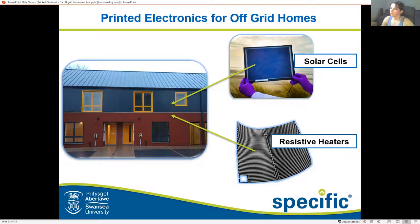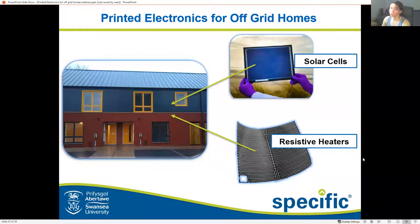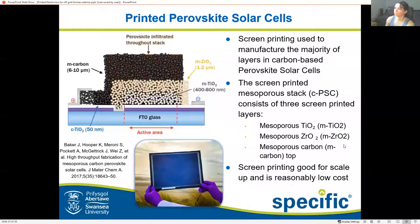My current work looks at producing printed electronics for off-grid homes. I work for SPECIFIC, whose main goal is to produce buildings as power stations. The house you see here actually exists in Bridgend right now as part of a new social housing scheme. It has flexible solar power panels on the roof, a big battery out in the back garden, and a lot of other cool tech. At SPECIFIC we research things to enable this — my main work looks at producing perovskite-based solar cells and resistive heaters which can be used as a new form of underfloor heating.